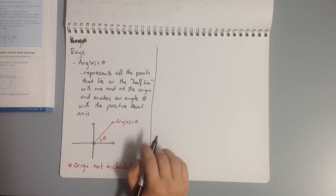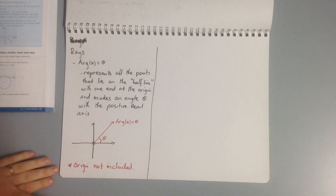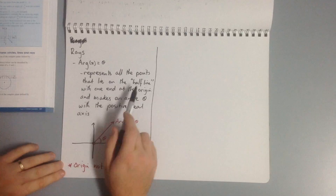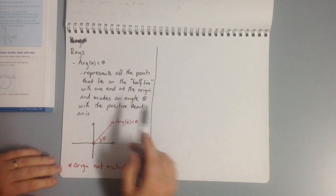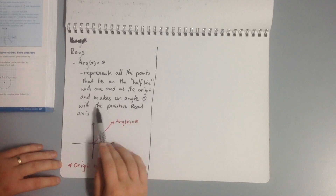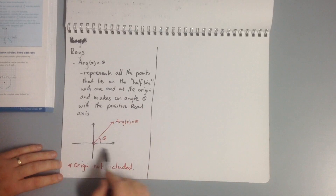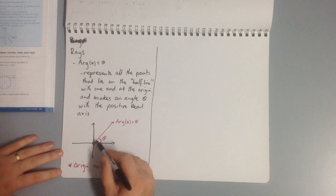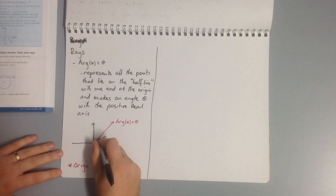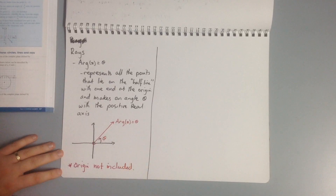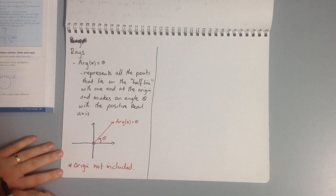The last topic is rays. Arg(z) equals theta represents all points on a half-line starting at the origin, making an angle theta with the positive real axis. We only have this part of the line — it doesn't continue in both directions — and the angle is measured from the positive real axis. Note that the origin is not included; it's an open dot.